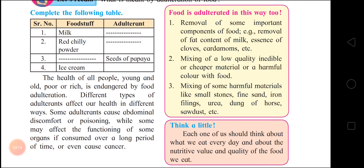The ways of food adulteration: first, removing important components of food — for example, removal of fat content from milk, or essence of cloves and cardamoms. Second, adding harmful color to food. Third, mixing a low-quality, inedible, or cheaper material into food — such as small stones, fine sand, iron fillings, urea, horse dung, sawdust, etc. — which are very harmful. The health of all people, young and old, poor or rich, is endangered by food adulteration.